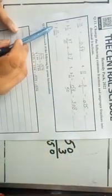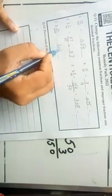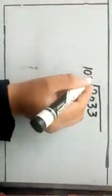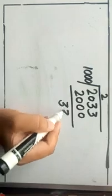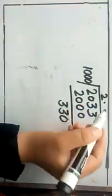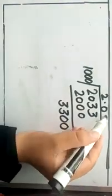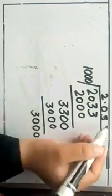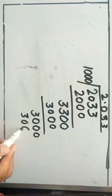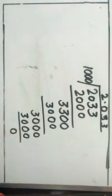The last problem gives us 2033 over 1000. Dividing 2033 by 1000: 1000 twos are 2000, remainder 33. We add a decimal point; 330 is less than 1000 so we write 0. Then 1000 threes are 3000, giving us 300 remaining; adding another 0, 1000 threes are 3000. So the answer is 2.033, which is the decimal fraction.